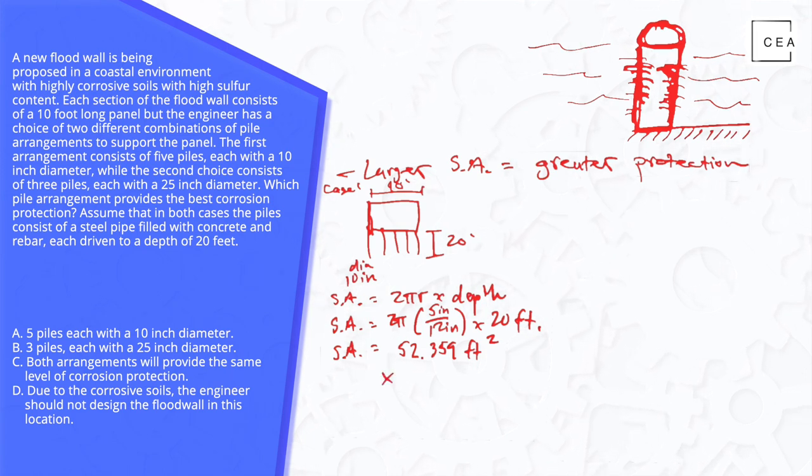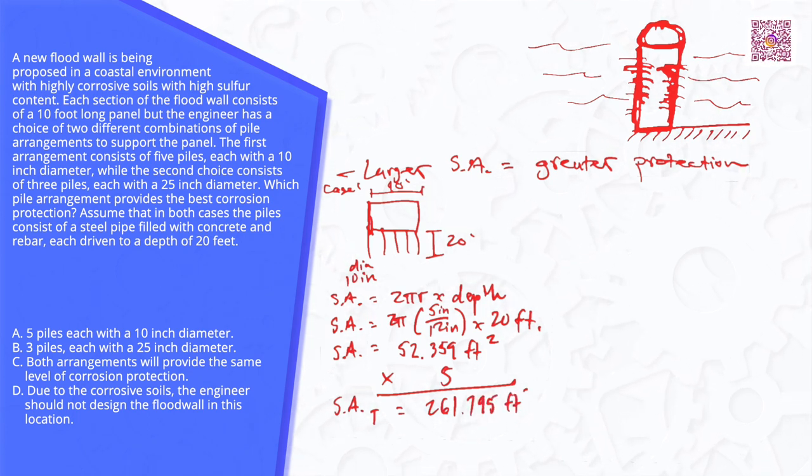So we'll multiply that by 5 because we said there's 5 piles in case one. For our total surface area, surface area subscript T for total. And we multiply 52.359 times 5. That gets this answer of 261.795 feet squared.